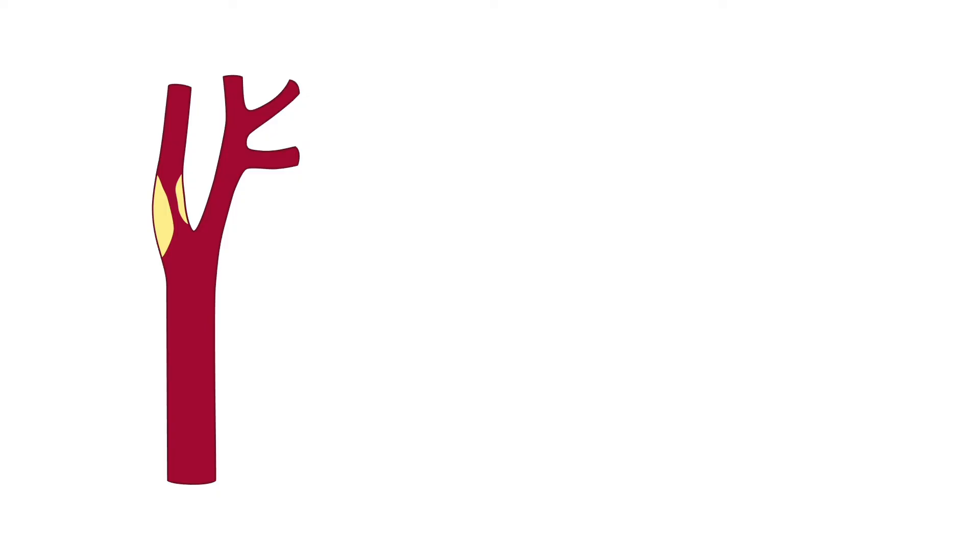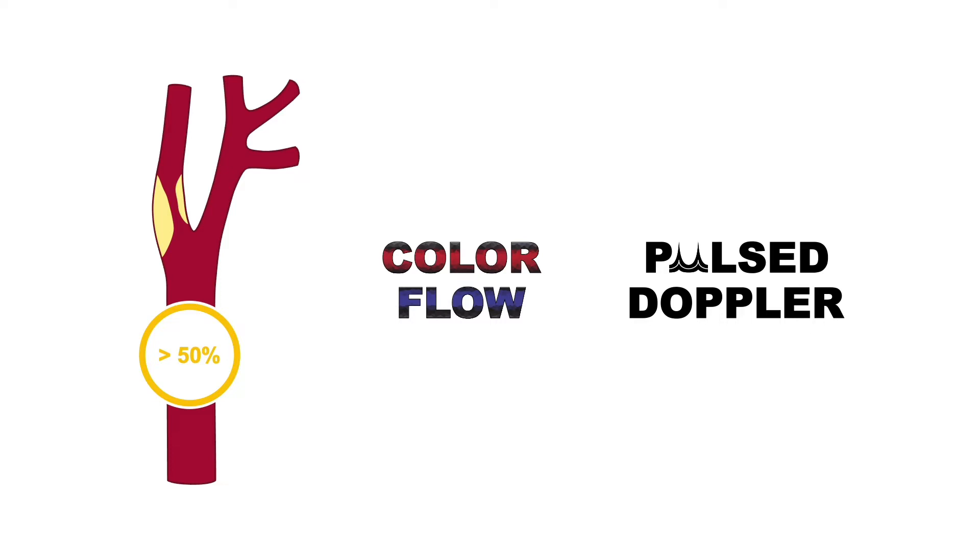If the athroma is more significant, meaning that it causes a greater than 50% reduction in the diameter of the lumen, then this should be apparent with the color flow and pulse doppler. When the diameter is reduced by 50%, velocities will start to increase through the narrowing and will be shown in the lighter shades of red on the color flow map.